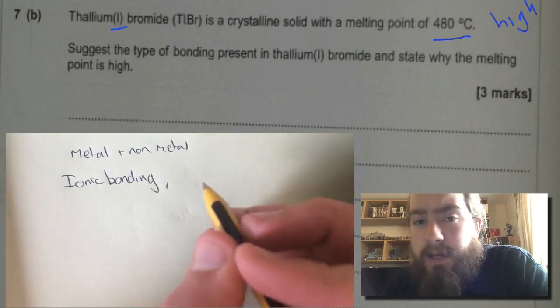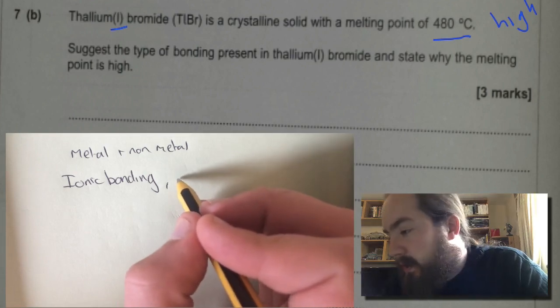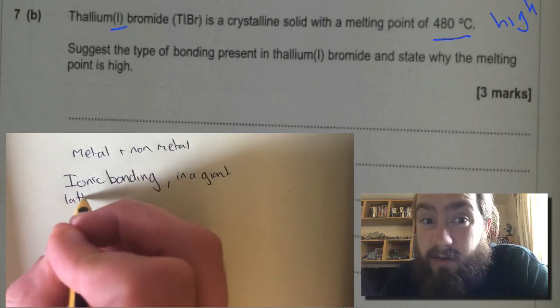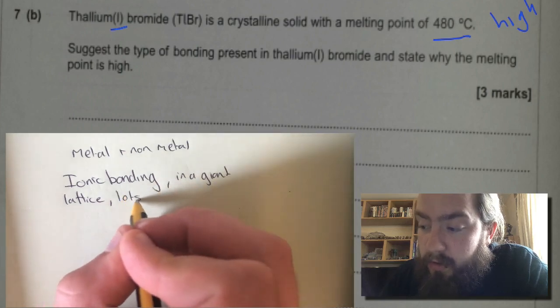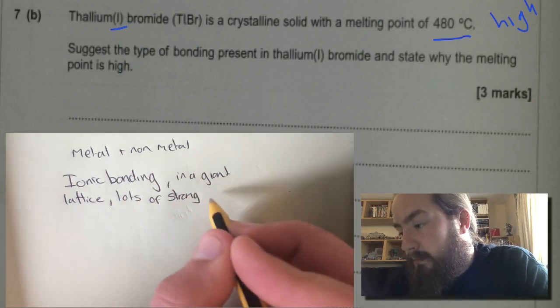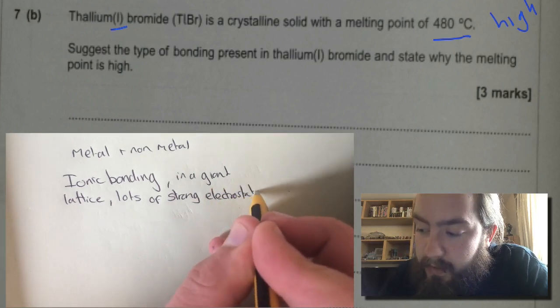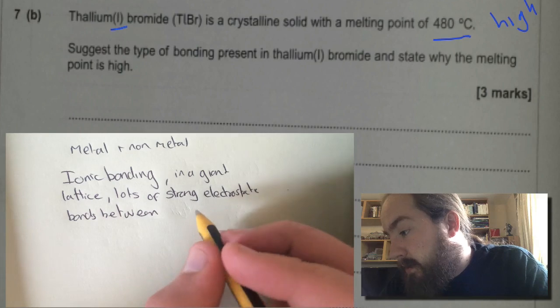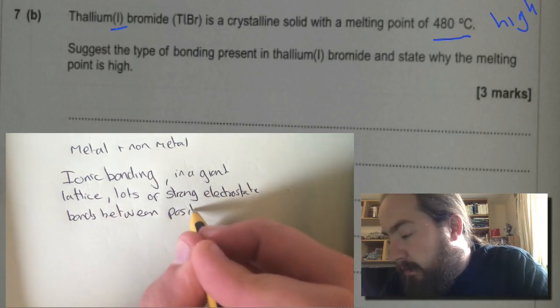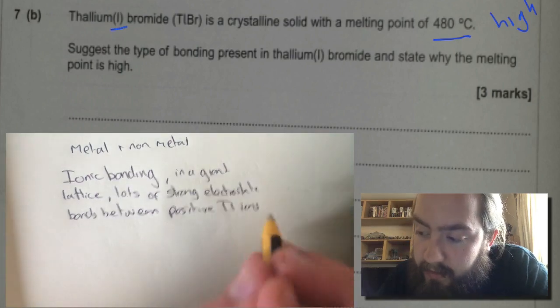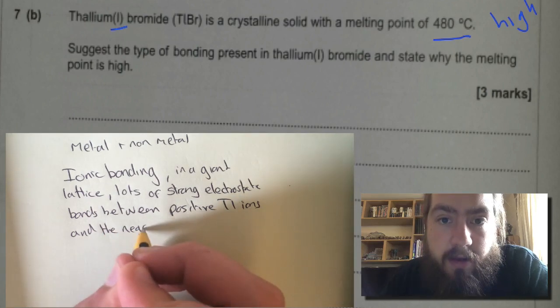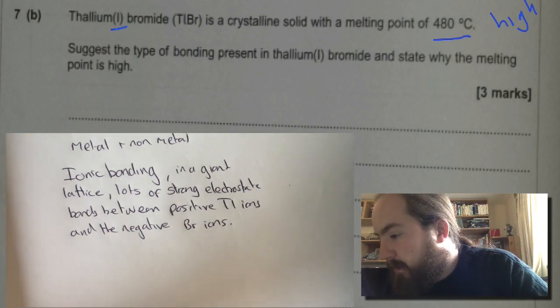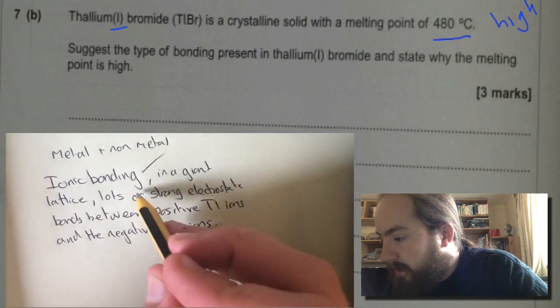The reason why the melting point is high is because it's going to form a giant lattice, which is what the crystalline solid is. And there are going to be lots of bonds. And these are going to be strong electrostatic bonds between the positively charged metal atoms. So it's the positive Tl ions and the negative bromine ions. Okay. Three marks. One for saying ionic bonding. One for saying lots of bonds. And one for saying the positive and negative.